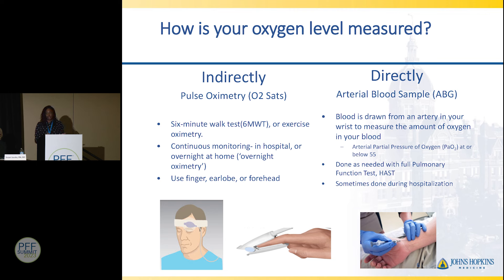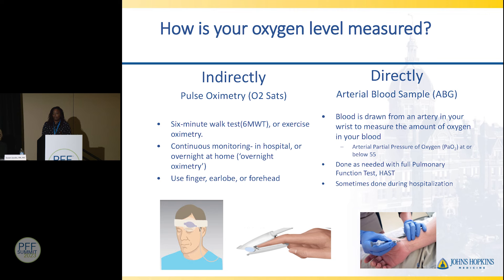Oxygen is measured in two ways. Indirectly, with pulse oximetry — whether on your forehead or finger — to measure oxygen saturation, and also via six-minute walk tests or exercise testing. Direct measurement can occur in a hospital with a blood sample drawn from your artery or vein. To qualify for oxygen, you need a PaO2 below 55%. HASS testing — high-altitude simulation testing — can determine whether oxygen is required on a plane for those who don't need it at sea level.